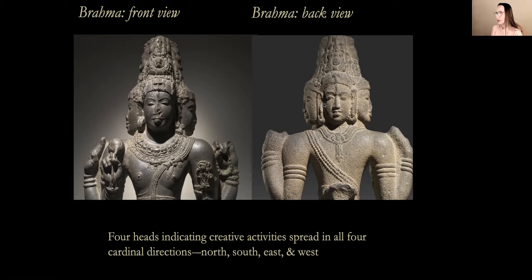You can see the back of the matted dreadlocks here, and the long elongated ears in the back, which are a signifier of princely status. The four foreheads indicate the creative activities of Brahma spread in all four cardinal directions — north, south, east, and west — so his creation covers all points of the universe.